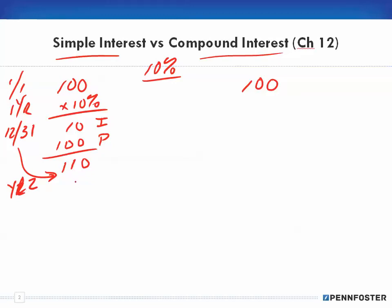In year two under simple interest, we get an additional $10 in interest, because we're only getting the ten percent on the principal amount — that's what simple interest is. At the end of the second year, if we haven't done anything to this account, we're getting ten percent on the hundred, which is $10, and our account would have a balance of $120.